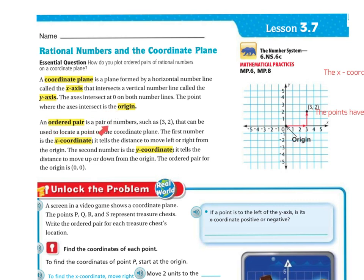An ordered pair is a pair of numbers, such as (3, 2), that can be used to locate a point on the coordinate plane. The first number is the x-coordinate — it tells the distance moving left or right from the origin. The second number is the y-coordinate — it tells the distance to move up or down. The ordered pair for the origin is (0, 0). For (3, 2), it's positive 3 and positive 2, so I go over 3 positive and up 2 positive — that's the plotted point.